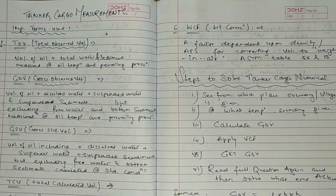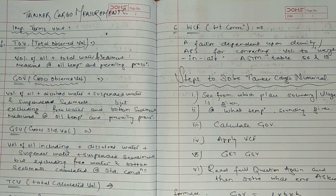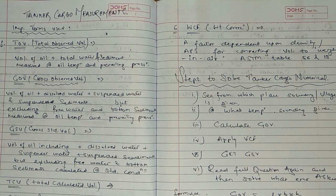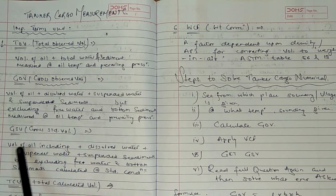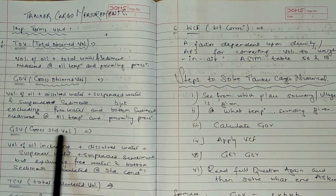GOV includes the volume of oil, dissolved water, suspended water, and suspended sediment. However, free water — which is separated from the oil — and bottom sediment are not measured. We need to measure oil temperature and prevailing pressure. Next is GSV, Gross Standard Volume.